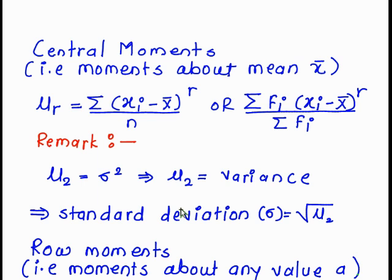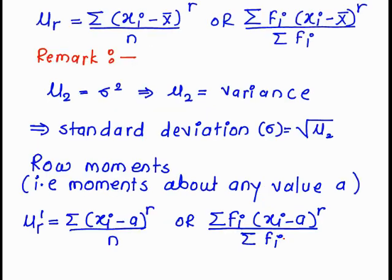Now we study the formula of raw moment, that is moment about any value a. Raw moment mu r dash is equal to summation of (xi minus a) raised to r upon n, or summation of fi times (xi minus a) raised to r upon summation of fi. We use these two formulas depending upon the data.